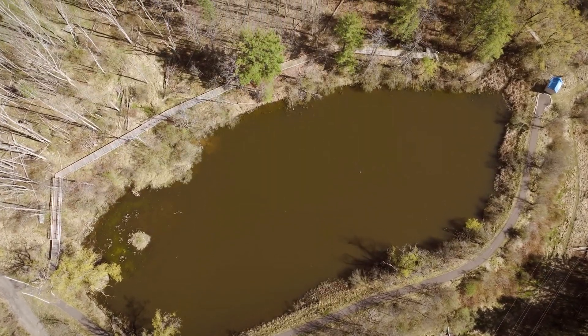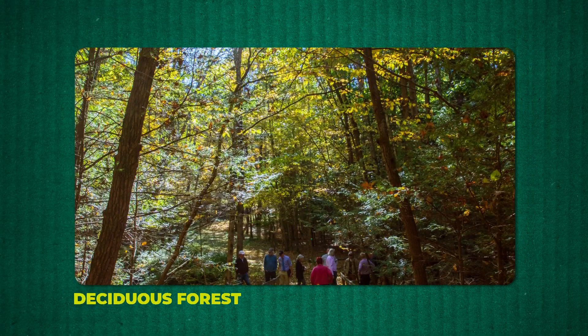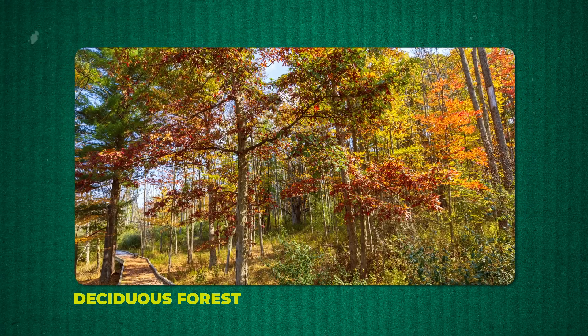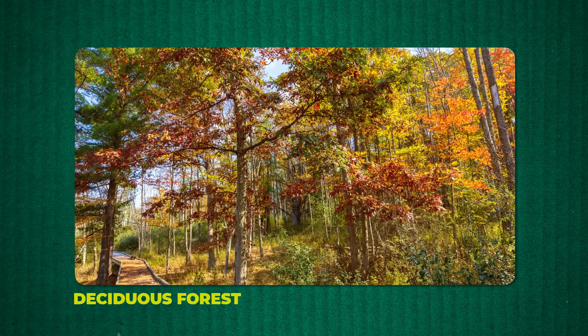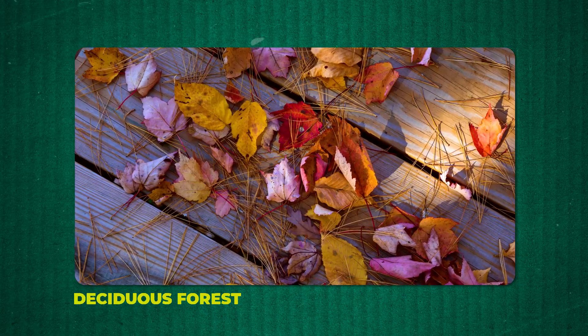We focus on four different major types of ecosystems here at Nuthatch Hollow — all natural systems that are in a sort of steady state. One of these is the deciduous forest, which is the area around the pond and a little bit further out where we're standing here.